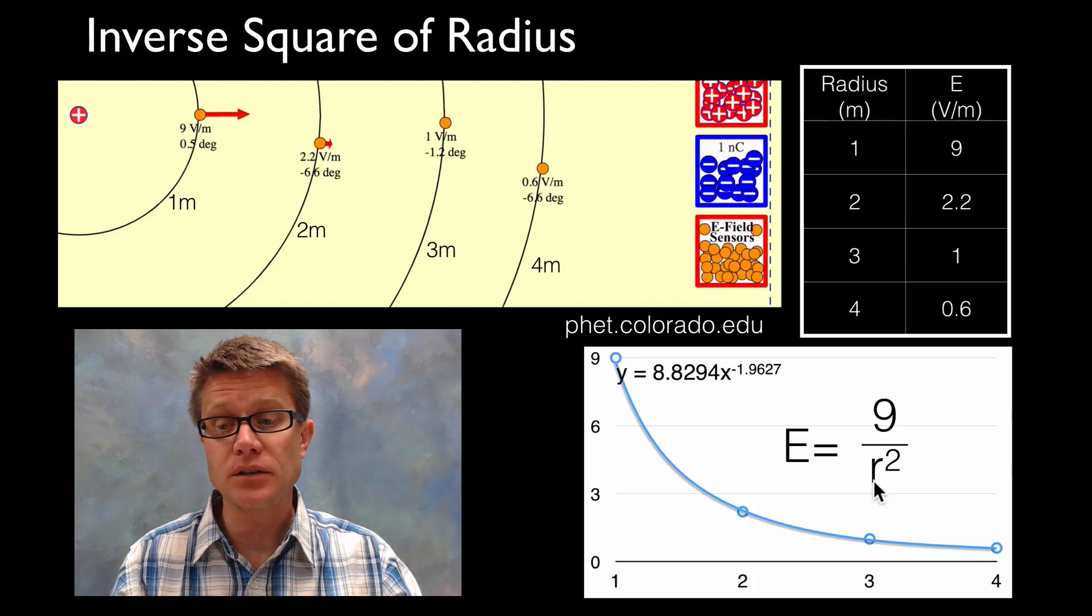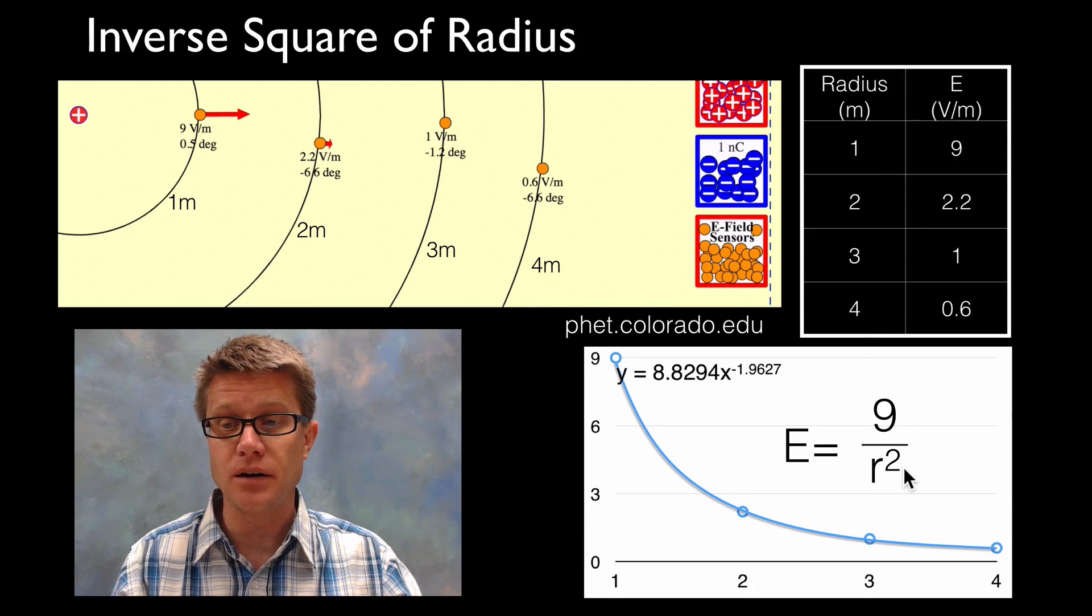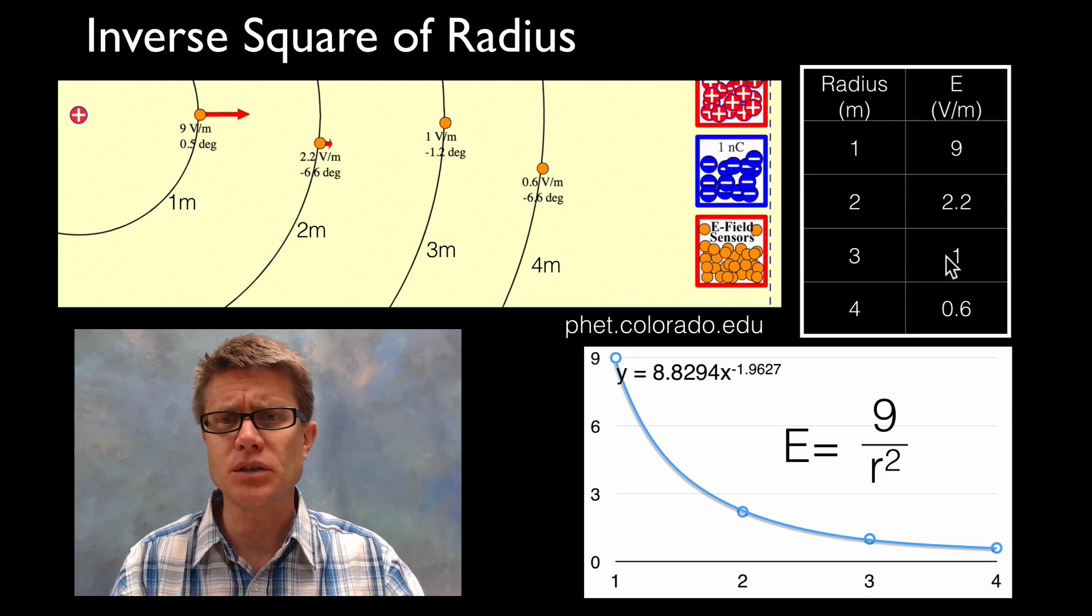If you think about it, if we are at a radius of 1, 1 squared is going to be 1, 9 divided by 1 would give me 9. Likewise if we are out here at a radius of 3, if I square that, 3 squared, I am going to get 9. So 9 divided by 9 is going to equal 1. So that seems to fit.